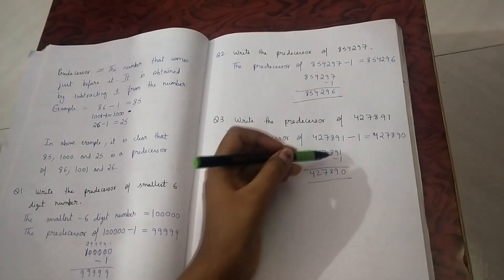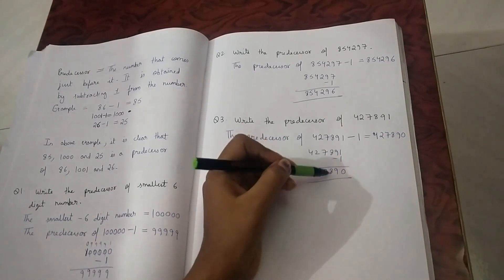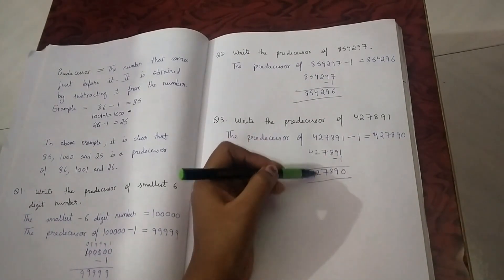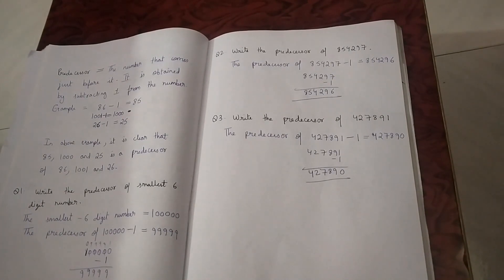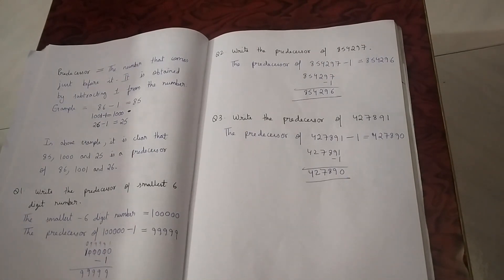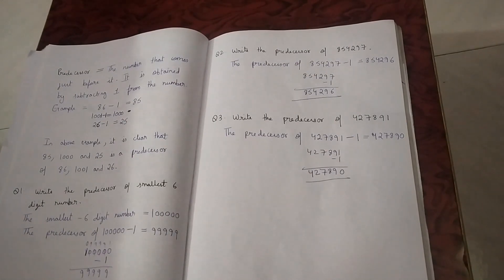See, the working is shown here: 1 minus 1 is equal to 0; 9 as it is; 8 as it is; 7 as it is; 2 as it is; 4 as it is. So today we have learnt what is successor and what is predecessor. Remember: if a question asks about the successor, we always add 1 to the number; and if the question asks about the predecessor, we always subtract 1 from the number.